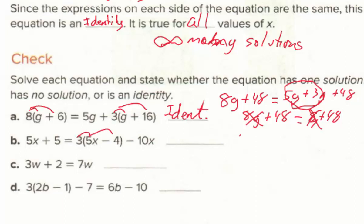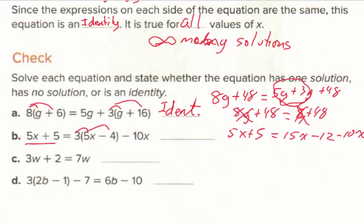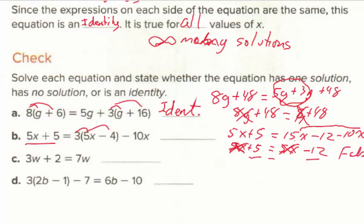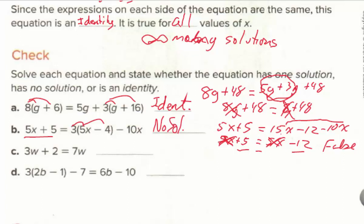For part B, distributing gives 5x + 5 on the left, equal to 15x − 12 − 10x on the right. Combining like terms: 15x − 10x = 5x, so right side is 5x − 12. Subtracting 5x from both sides leaves 5 = −12, which is false — so no solution, written with the empty set symbol. For part C, subtracting 3w from both sides gives 2 = 4w, so w = ½. Since a variable remains, this has one distinct solution.